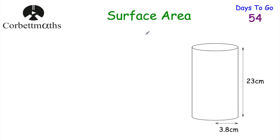Today we're going to be looking at surface area — the surface area of cylinders, cones, spheres, and so on. So let's find the surface area of the cylinder. We want to find the area of all the surfaces, so we need to find the area of the circle on the top, the area of the circle on the bottom — they would be the same — and this curved surface area, the one going around the outside.